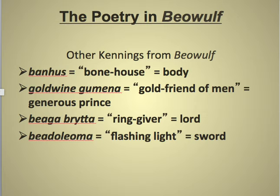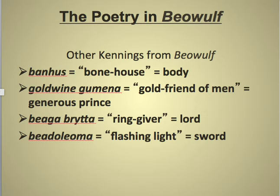You'll also see 'Goldfriend of Men,' which means a generous prince; 'Ringgiver,' which means a lord; or 'Flashing Light,' which means a sword. We'll be making a list of kennings as we read to make sure we all understand what they mean.